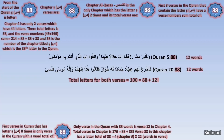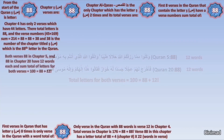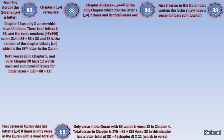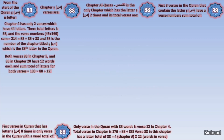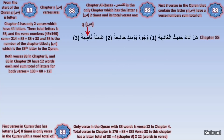Everything is revolving around the number 88, so surely we must look at chapter 88 — chapter Al-Ghashiya. The first appearance of Saad, the 88th letter in the Quran, in chapter 88 came in the third verse. Because this is a unique Saad revolving around the number 88 and this is its first appearance in chapter 88, we look much deeper.